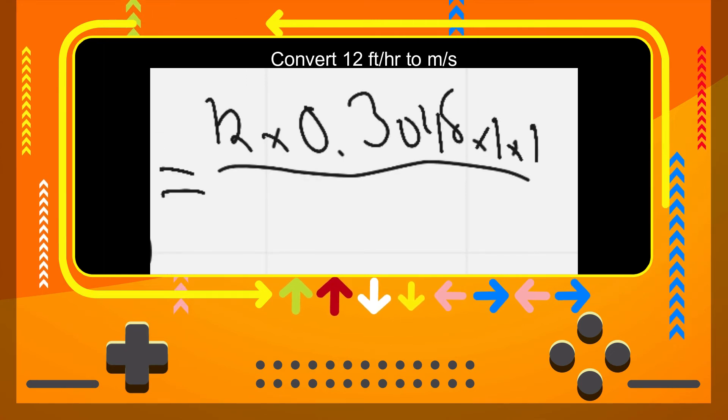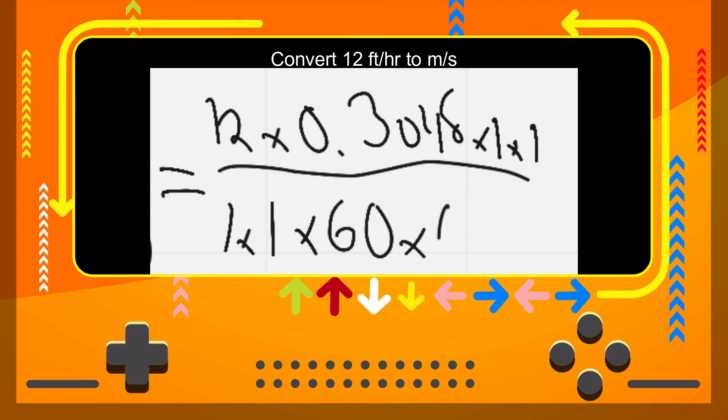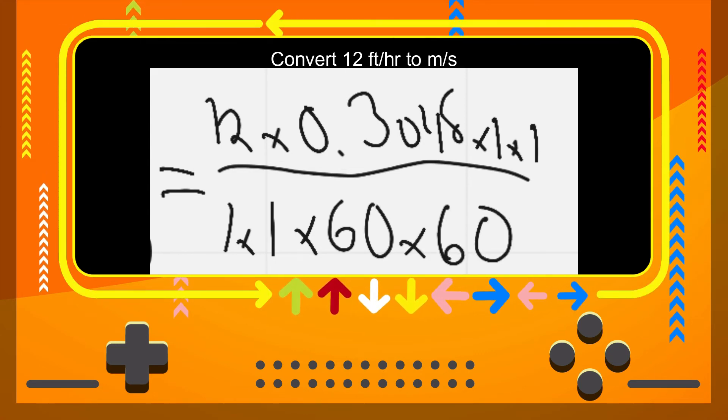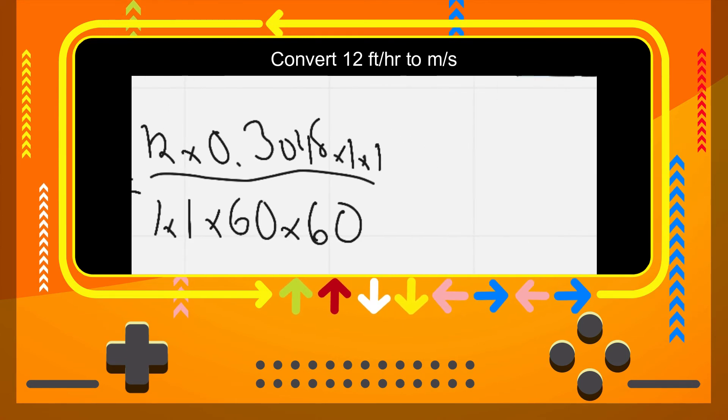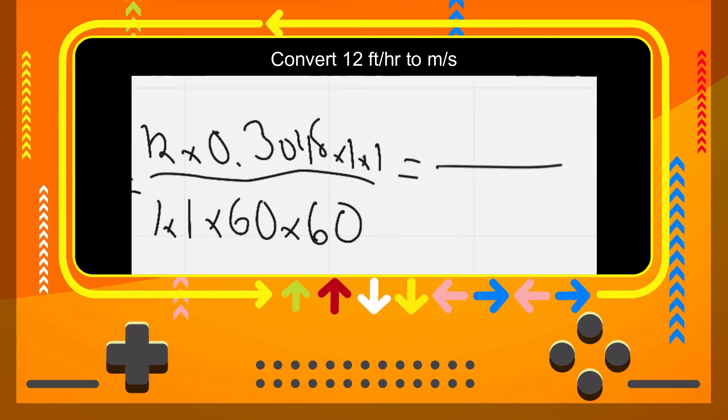12 times 0.3048 times my one times my one. And then I'm going to do the same exact thing on the bottom, because I understand that this is implied one here. So one times one for my one foot times 60 times another 60.